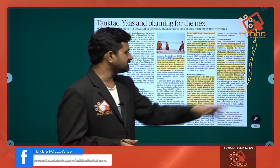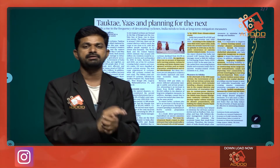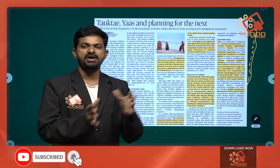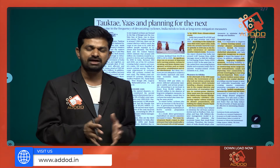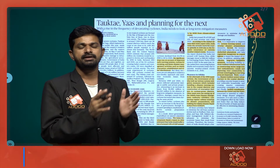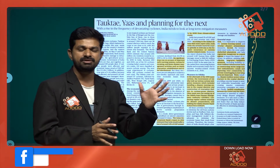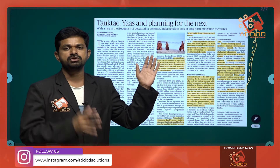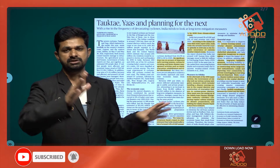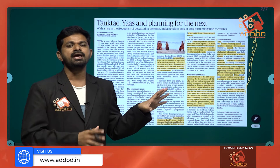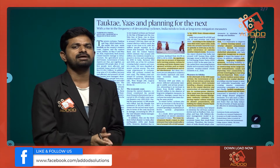Finally, healthy coordination between the center and state is of utmost importance. Whenever losses occur, states urge the center for support, but the center may not respond timely due to lack of funds or other reasons. It is necessary to safeguard our coastline, which spans almost 7,500 kilometers from Gujarat in the west to West Bengal in the east. Both the Arabian Sea and Bay of Bengal lead to formation of cyclones.